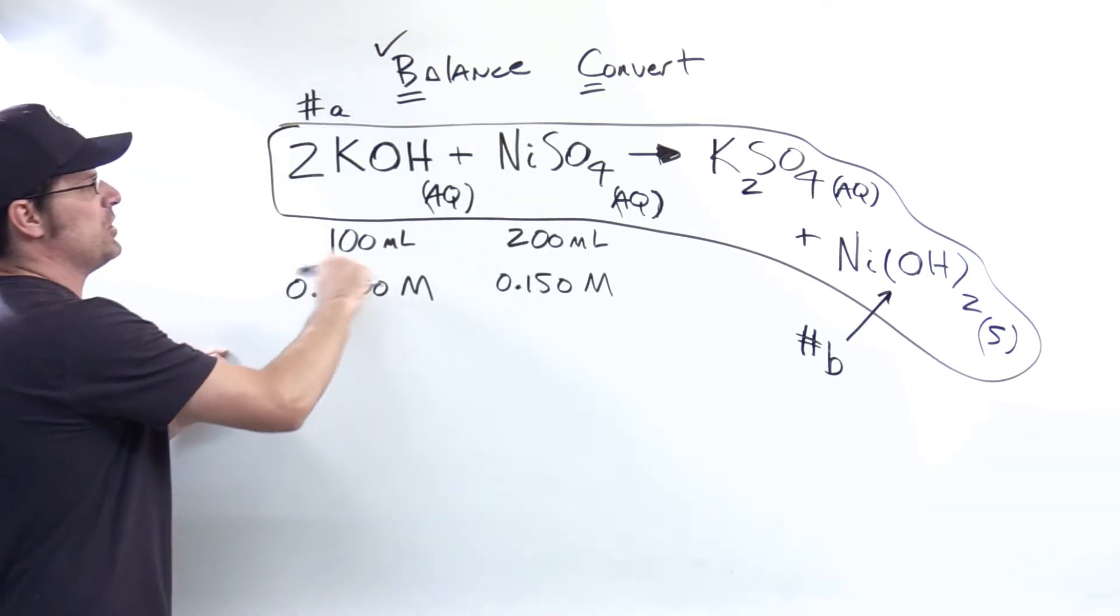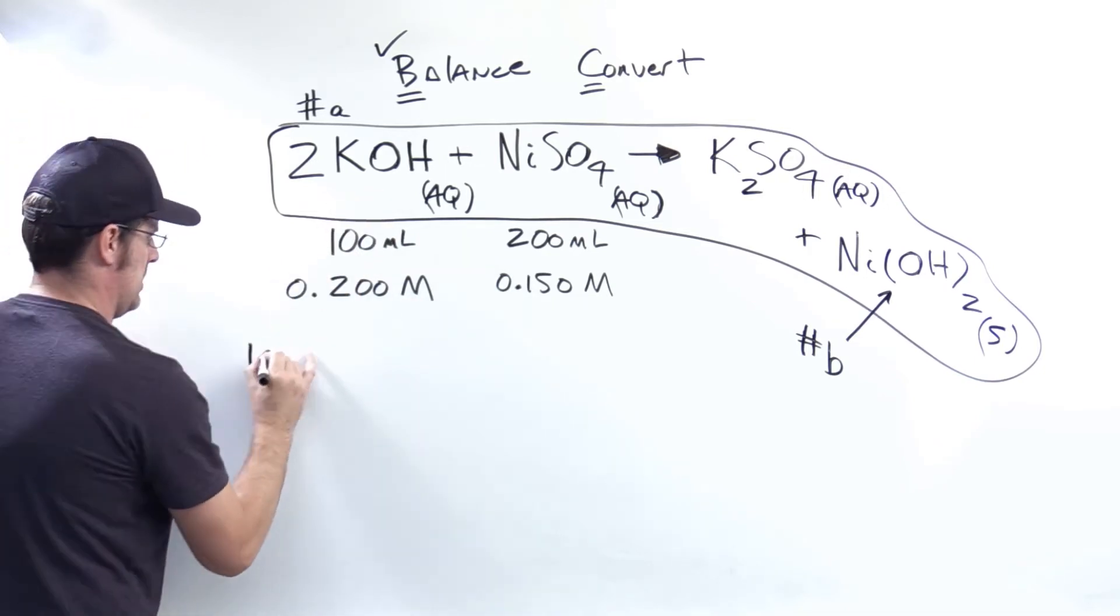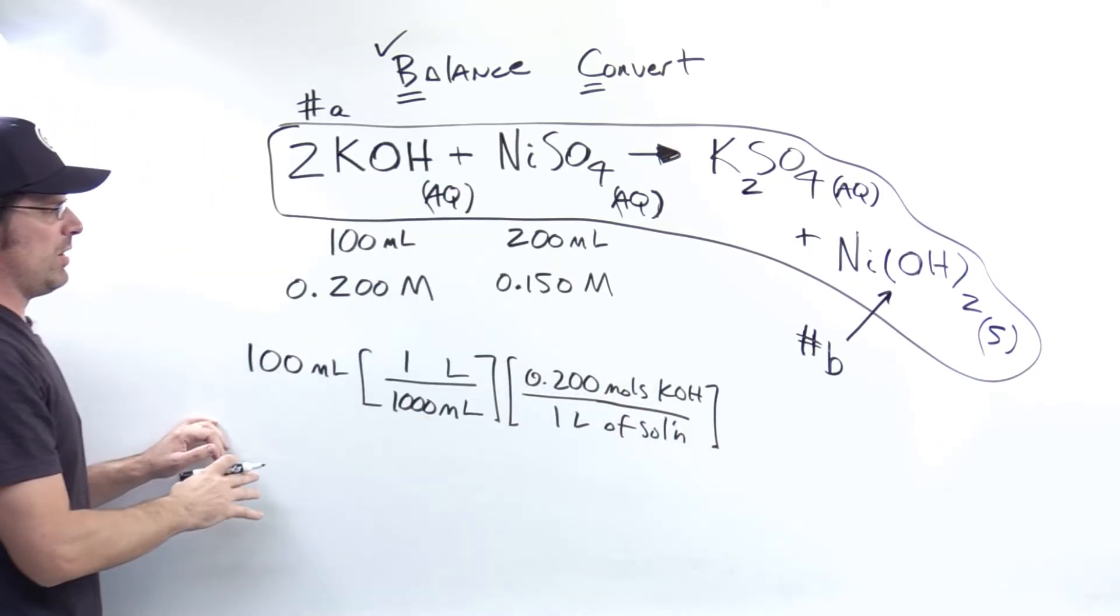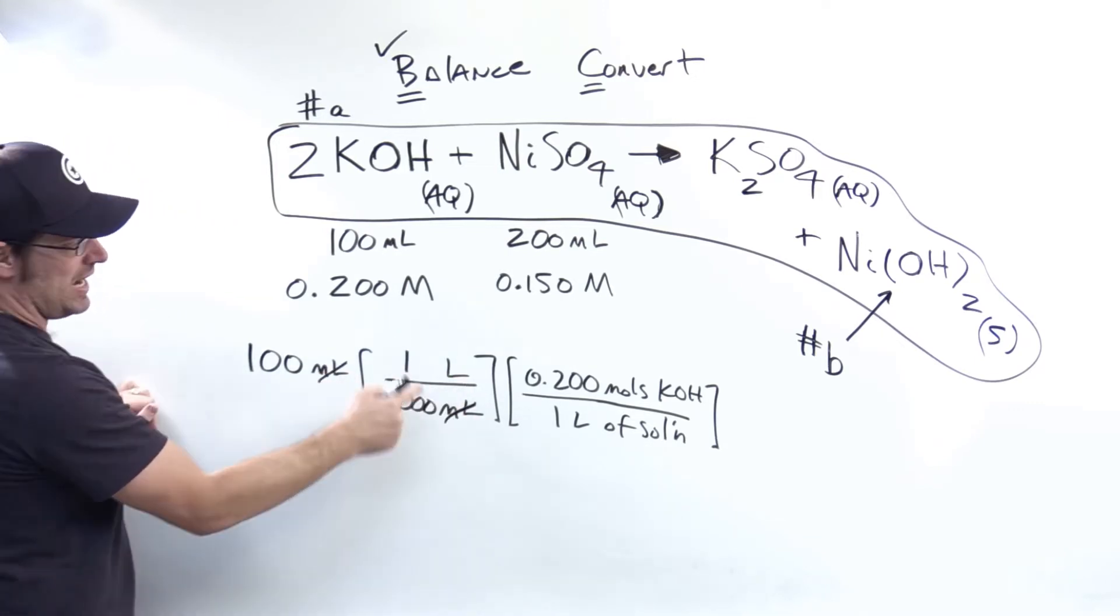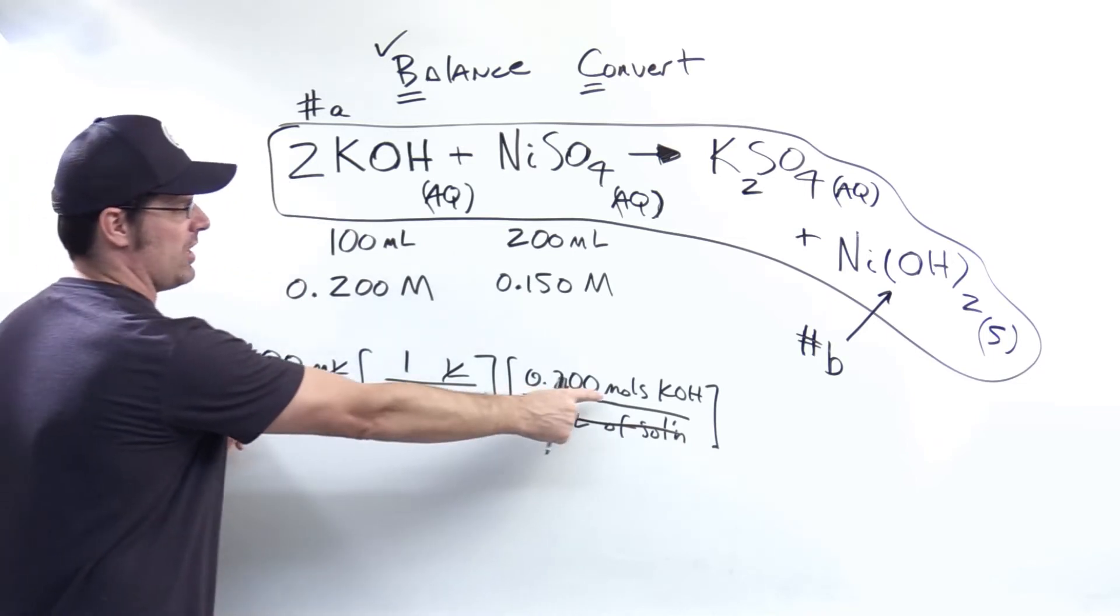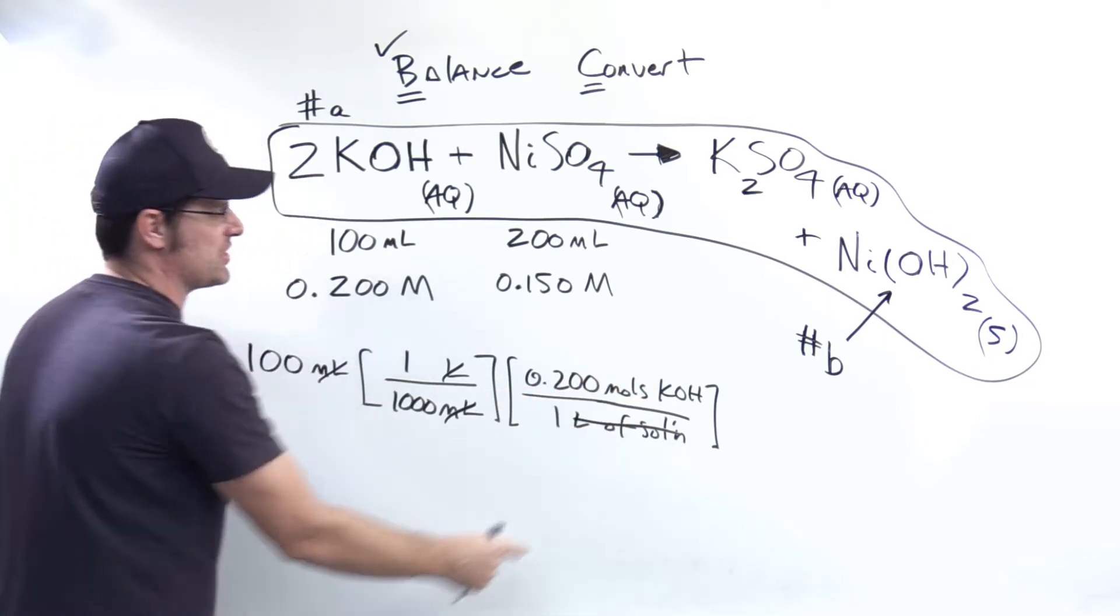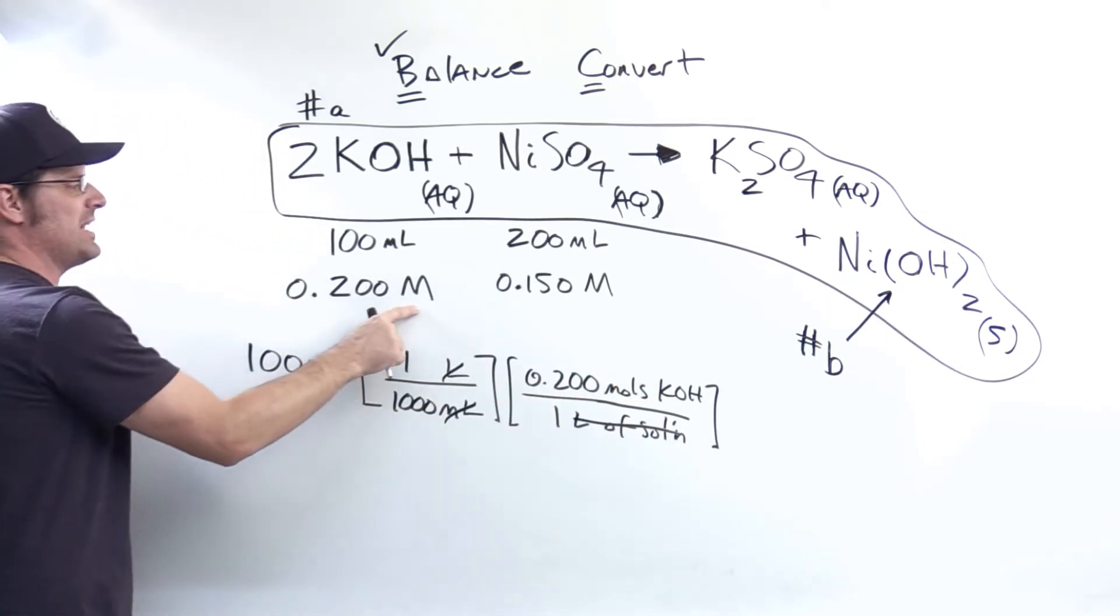So let's go ahead and do that using dimensional analysis. For our KOH, we'll write it all out like this. You'll notice my milliliters cancel each other out. I've got liters here tied to milliliters. That will cancel out liters of solution. Now right here, I've got moles KOH per liters of solution. Where did I get that number? That's the capital M.